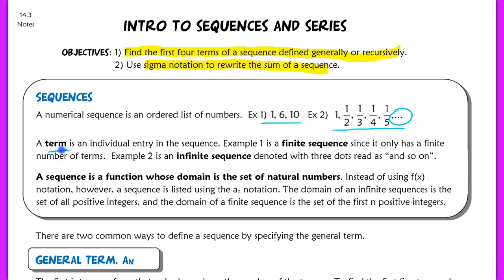A term is just an individual entry in the sequence — term 1, term 2, term 3. A sequence is a function whose domain is the set of natural numbers, but instead of function notation we use a sub n notation. The domain of an infinite sequence is all positive integers, while the domain of a finite sequence is just the set of the first n positive integers.